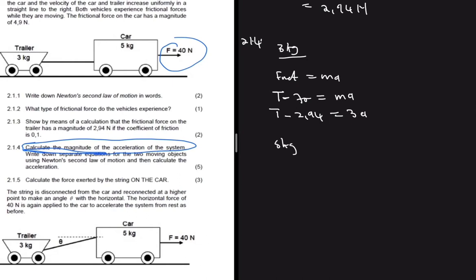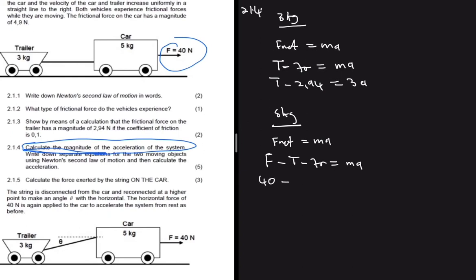For the 5 kg car, the applied force of 40 newtons is pulling it. Applying F_net = ma: F_applied − T − friction = ma. The applied force is 40 N, tension T is unknown (opposing, from the trailer pulling back), and the frictional force on the car is 4.9 N. So: 40 − T − 4.9 = 5a.